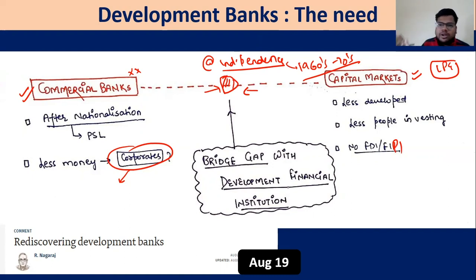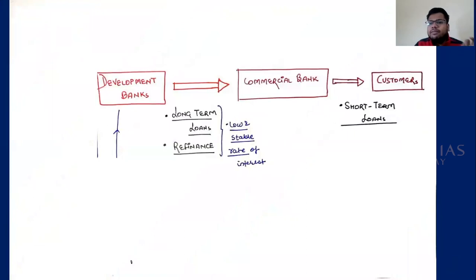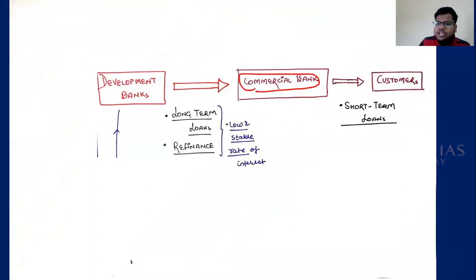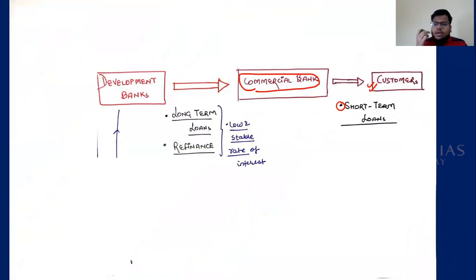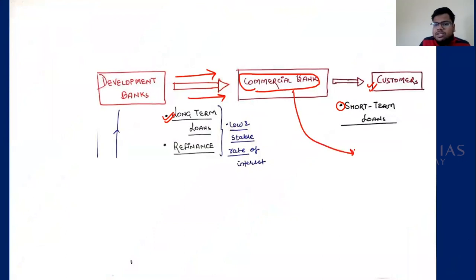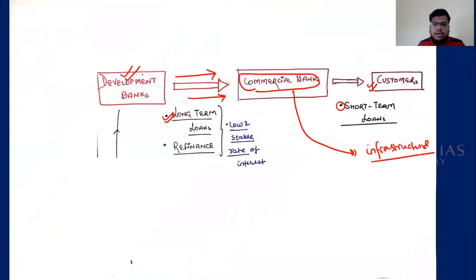The need was for long-term finance — commercial banks couldn't provide it, capital markets were undeveloped. Development banks do not give money directly to customers; direct money to customers is given only by commercial banks. Commercial banks give short-term loans, but commercial banks are supported by development banks through long-term loans — they provide refinance facility so commercial banks can give long-term loans for infrastructure.